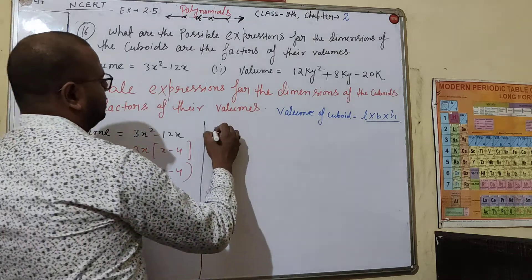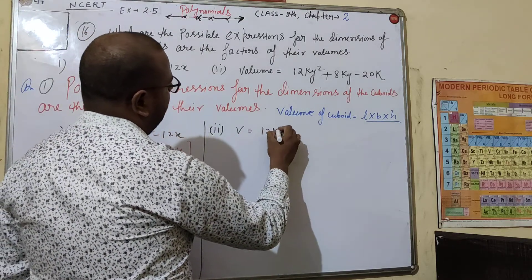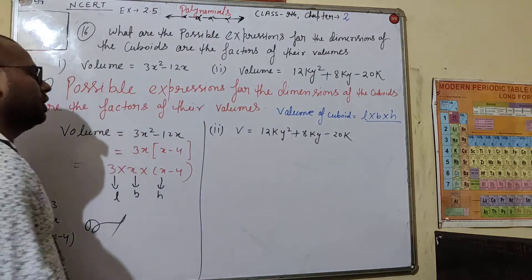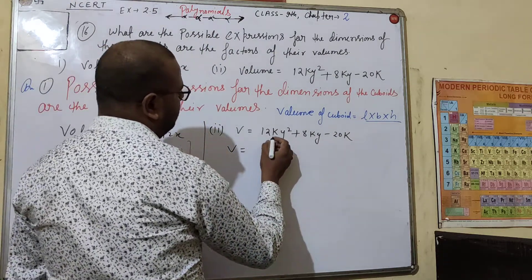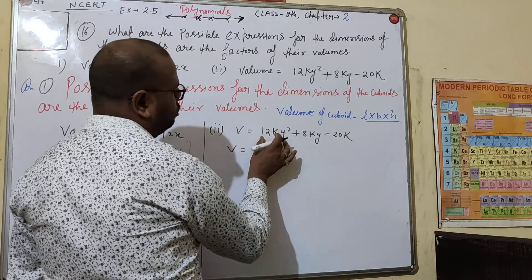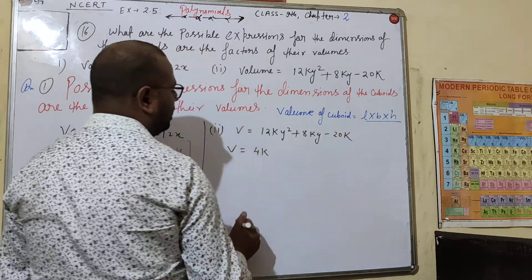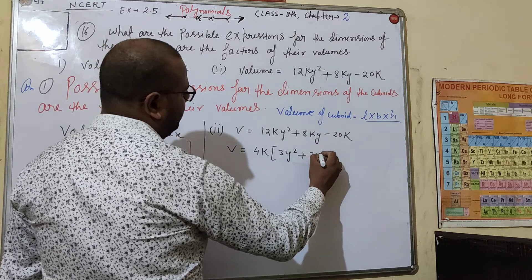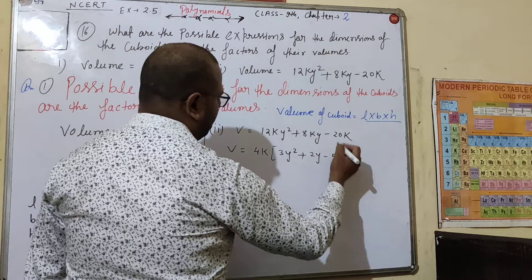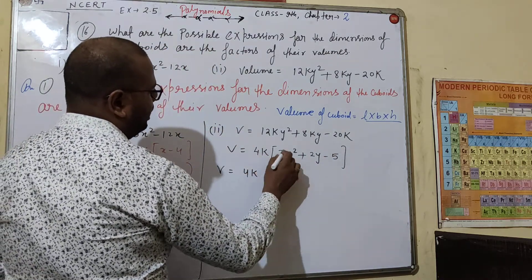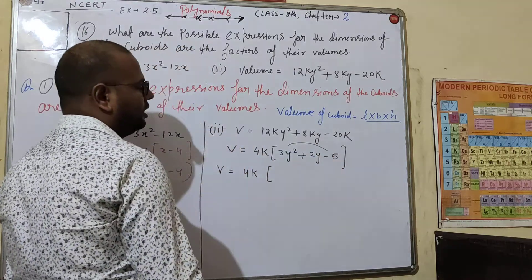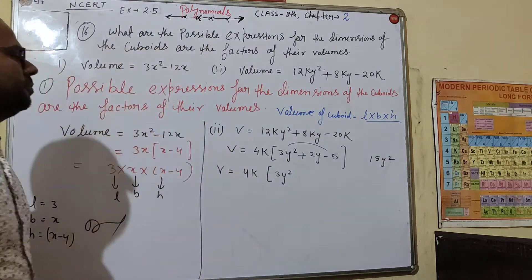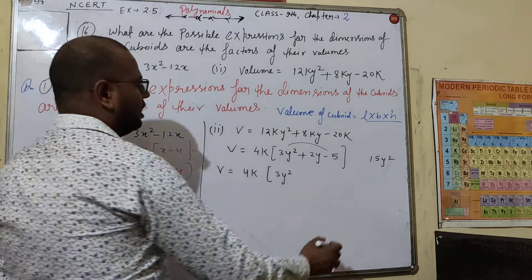Now the second question: the volume is 12ky² plus 8ky minus 20k. We have to factor this to get the dimensions. First, we take 4k as common, giving us 4k times the expression 3y² minus 2y inside.